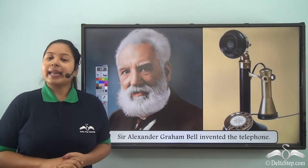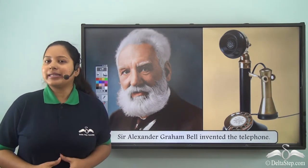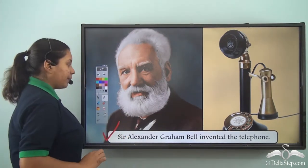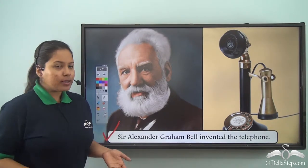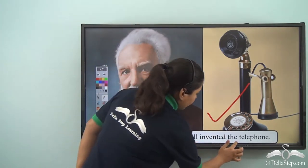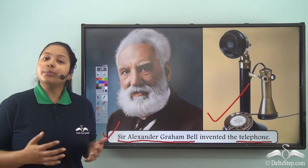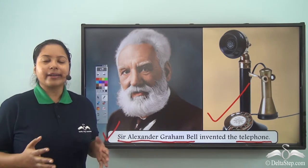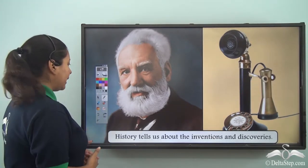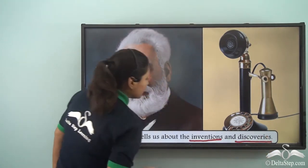Not only that, history also helps us to know about inventions and discoveries. This is the picture of Sir Alexander Graham Bell. Why is he so famous? Because he invented the telephone. Because of that, nowadays we have mobile phones which have helped us in making our communication very easy. How do we know about him? With the help of history. History tells us about inventions and discoveries.